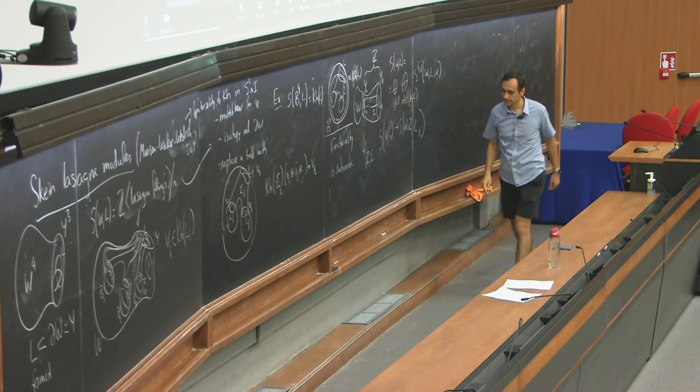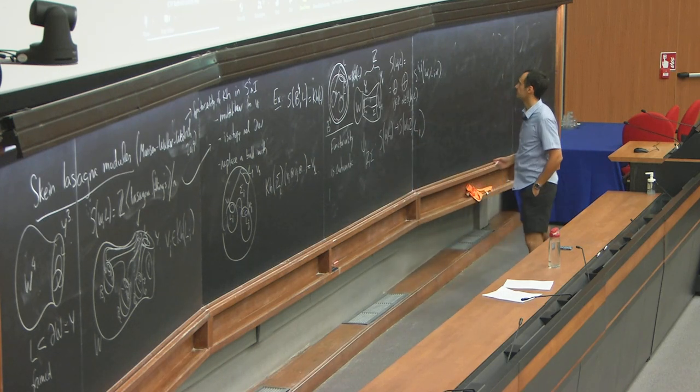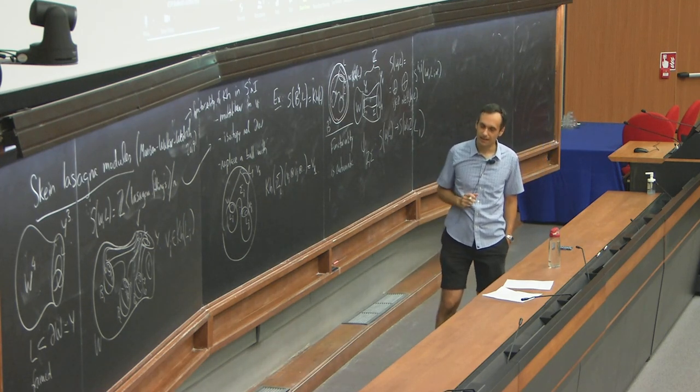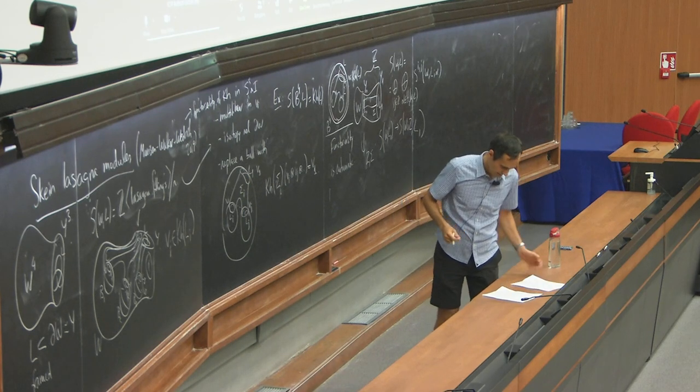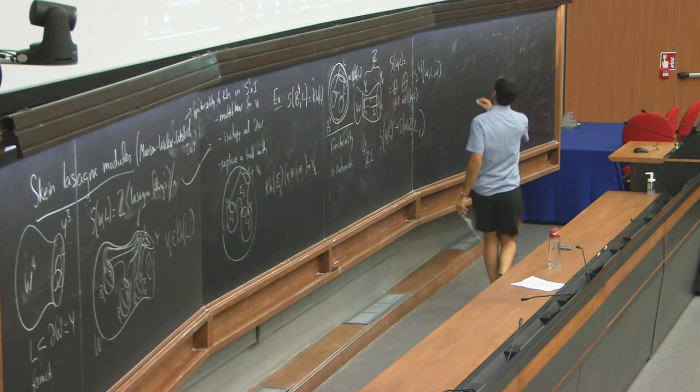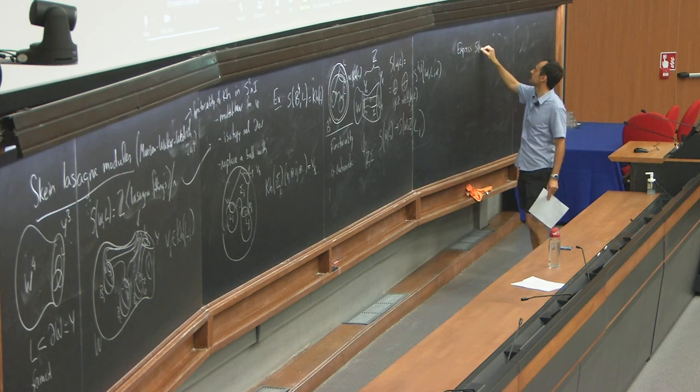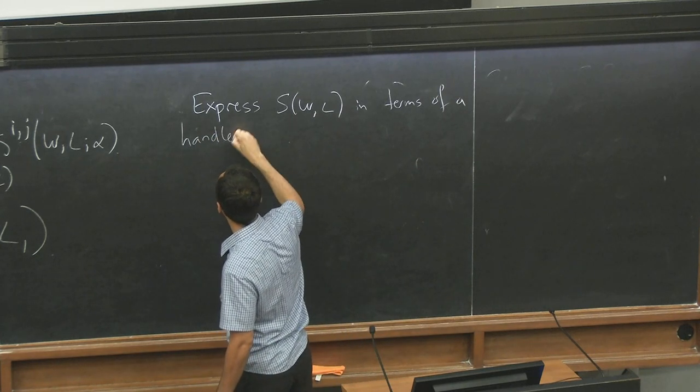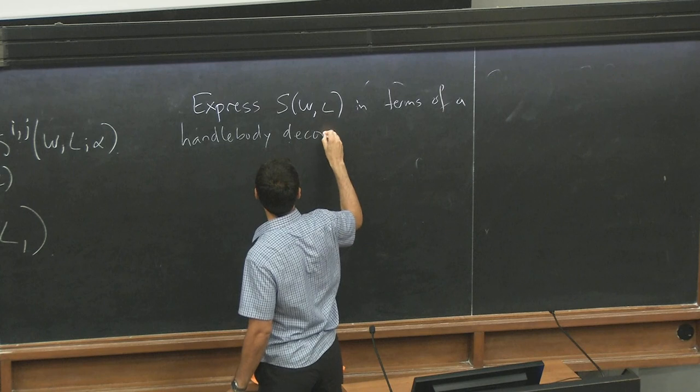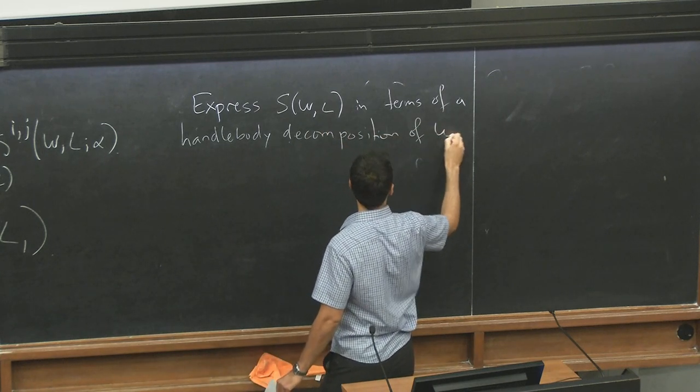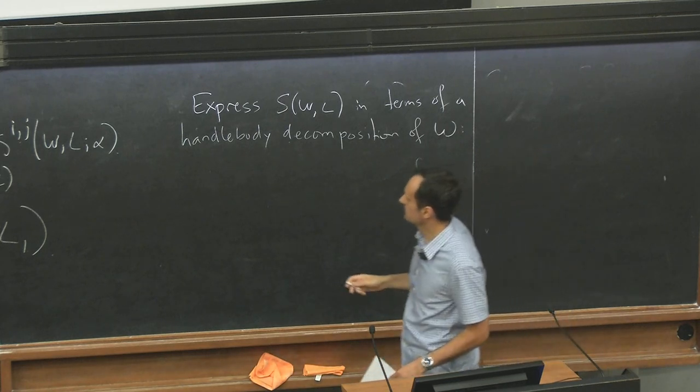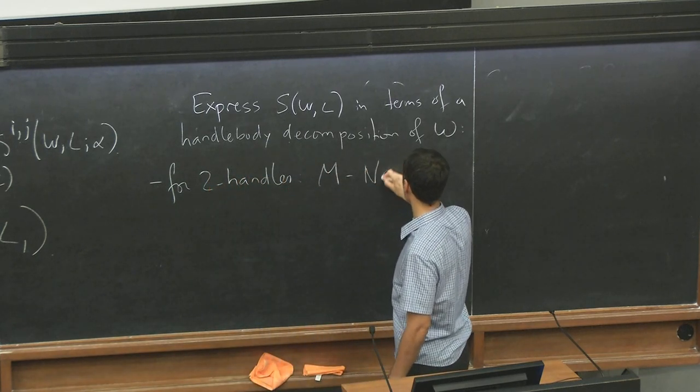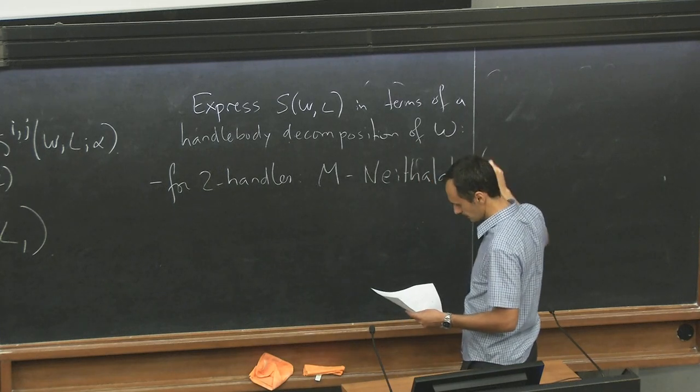All right, so what I want to talk about is how to compute this. Can we compute it for anything else and, yeah, so basically, well, if you want to compute something for four manifolds, you have to understand how it changes when you add handles. So, what I want to say is how to express SWL in terms of a handle body decomposition of W.